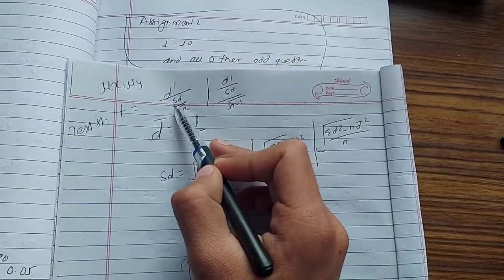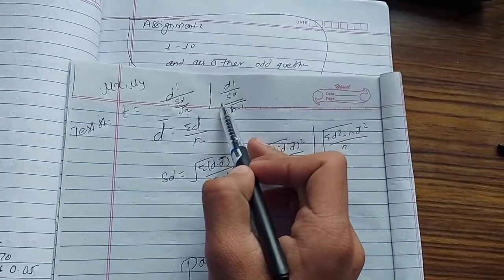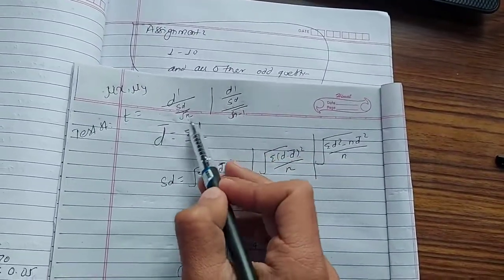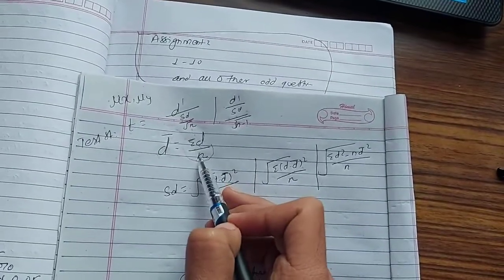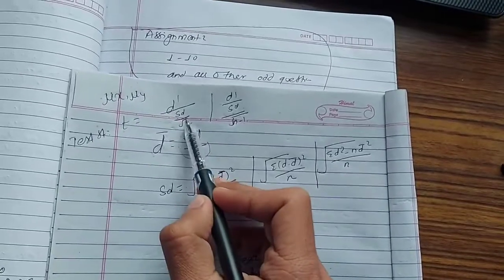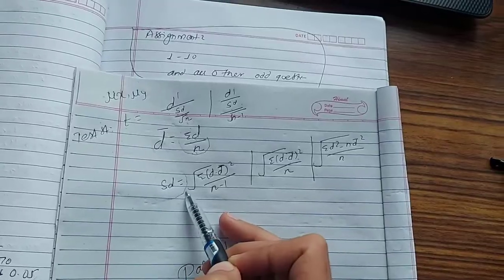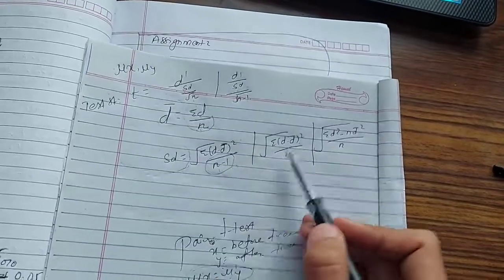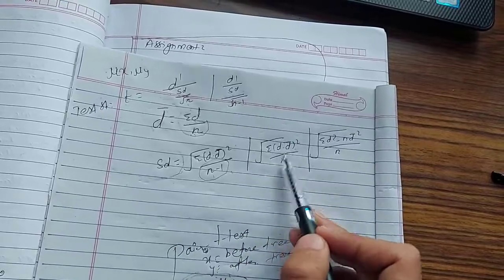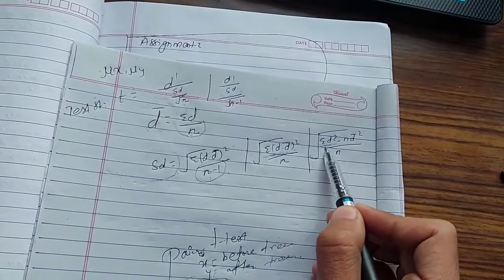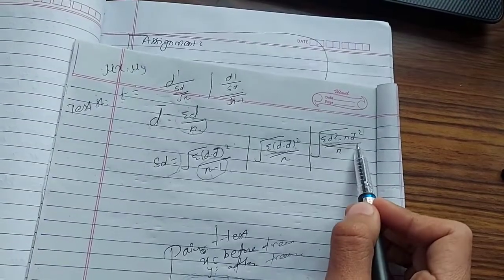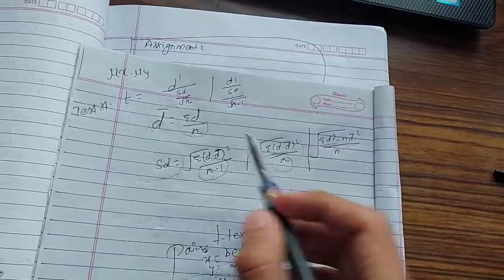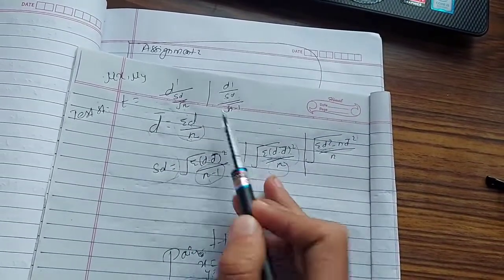t equals d bar upon standard deviation of d upon root n. d bar is summation d upon n. Standard deviation formula is summation d minus d bar squared upon n minus 1. Or you can use summation d squared minus d bar squared upon n minus 1.